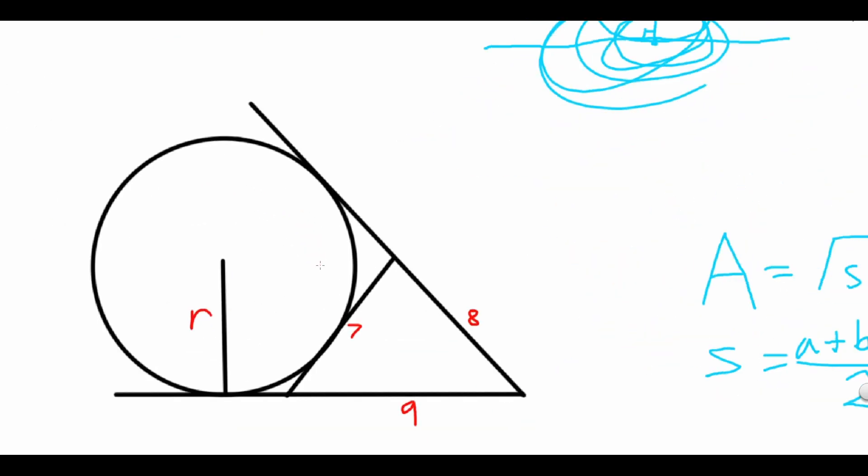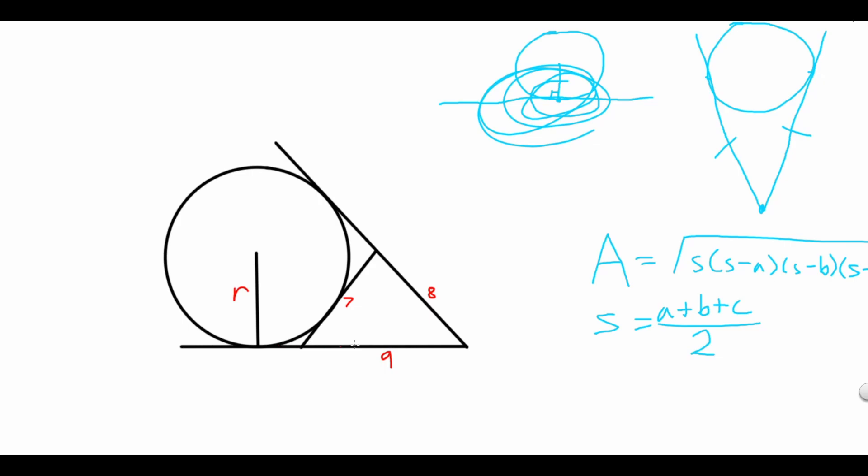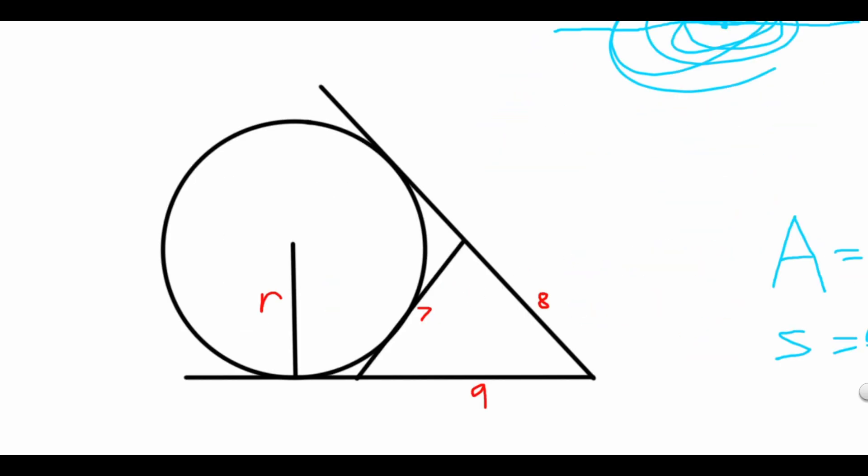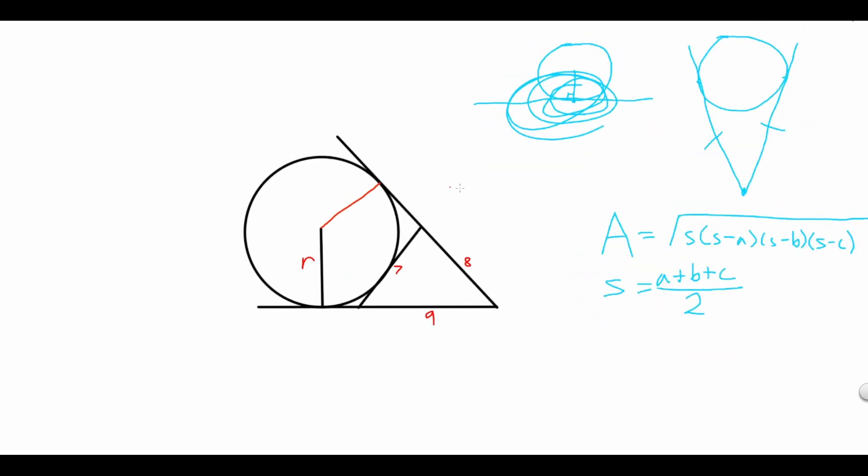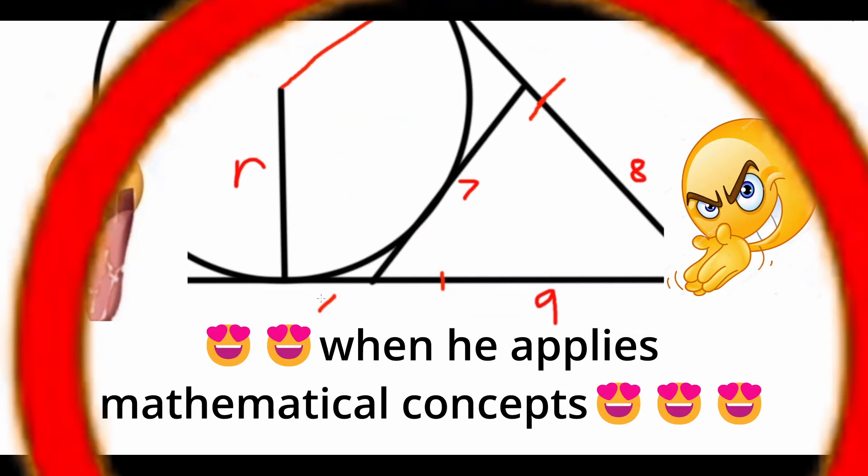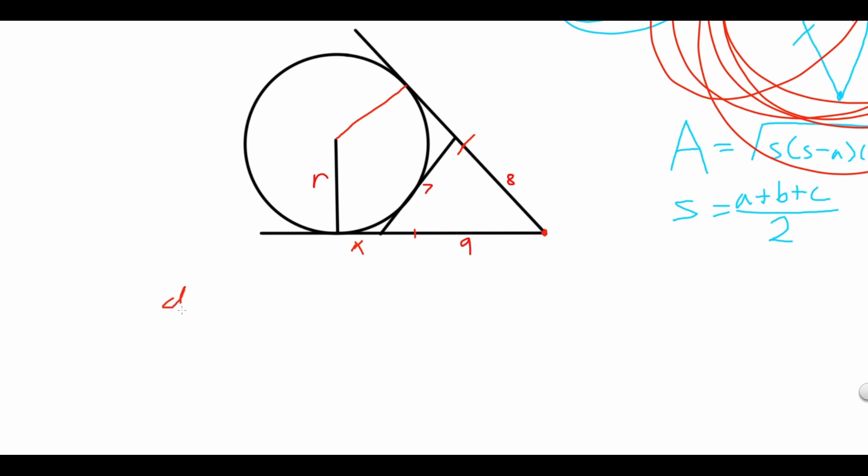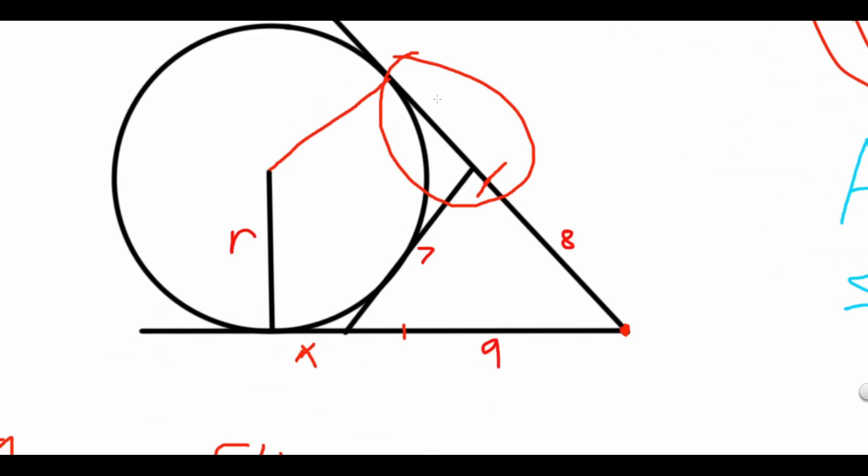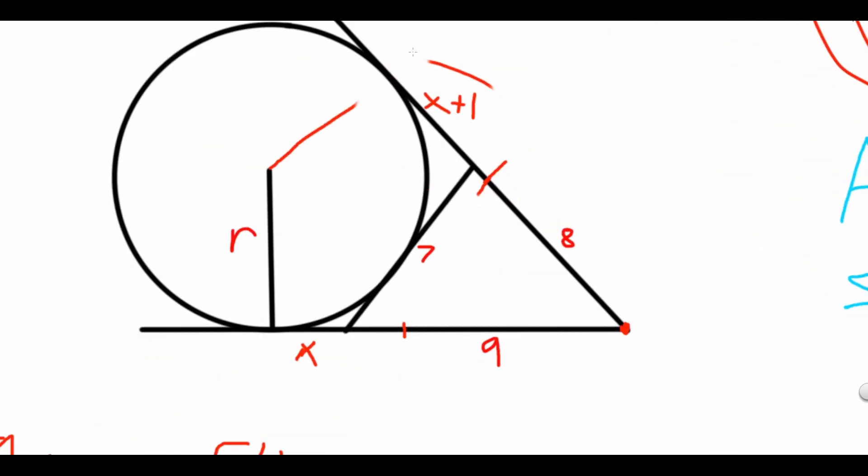To start off, let's get the lengths of the lines between the end of sides 8 and 9 and the tangent points of the circle. Since we know that any two tangent lines drawn from a point are the same length, we know that these two lines are the same length. Let's put this bottom one as X. Since these are the same lengths, 9 plus X is equal to 8 plus X plus 1, meaning that the length of the line on top is X plus 1.